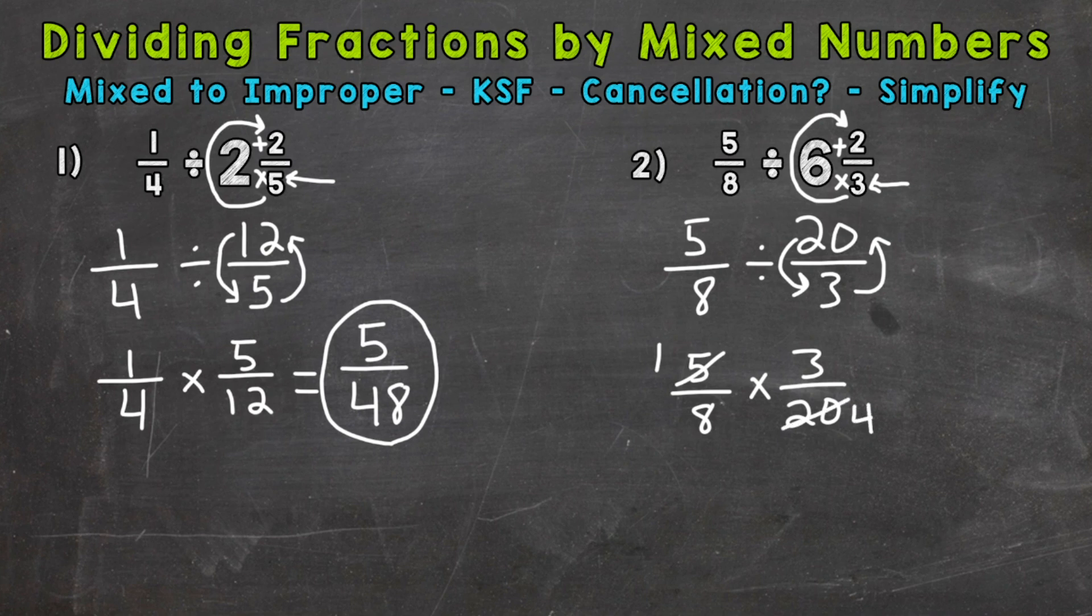Looking at the three and the eight now, the only common factor between those two numbers is one. So we are done with cancellation. That cancellation gave us some smaller numbers to work with and made everything easier. One times three is three, and eight times four gives us thirty-two.